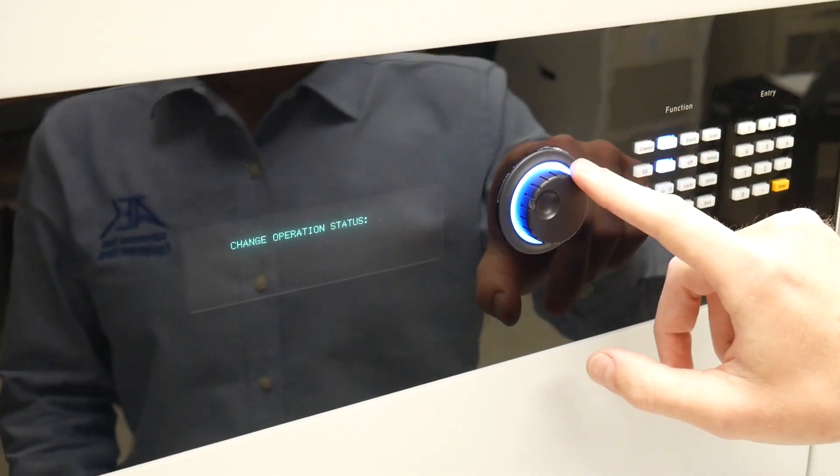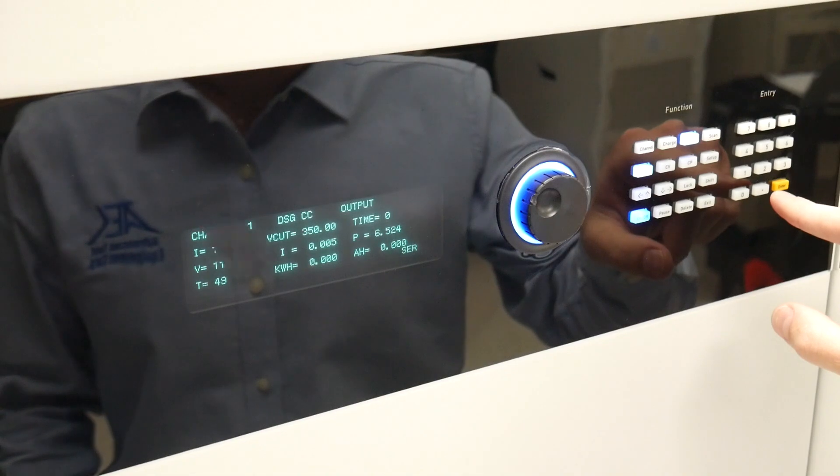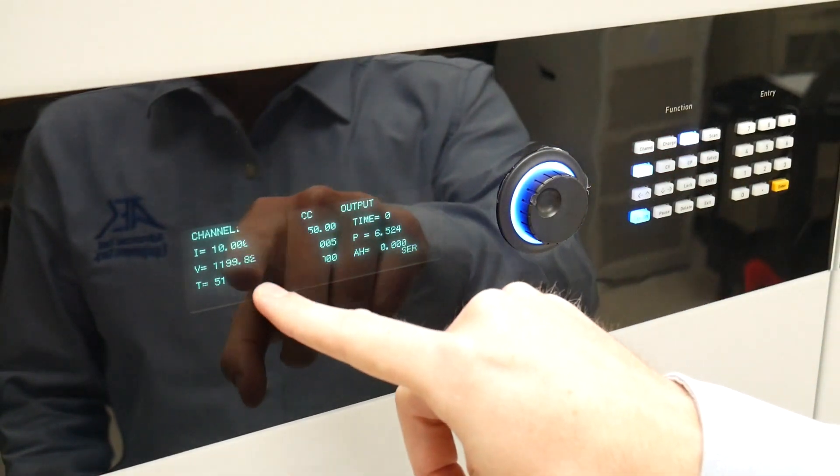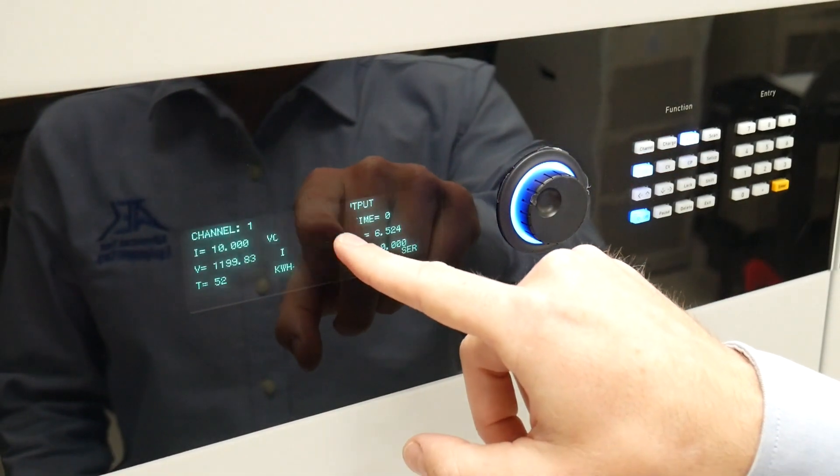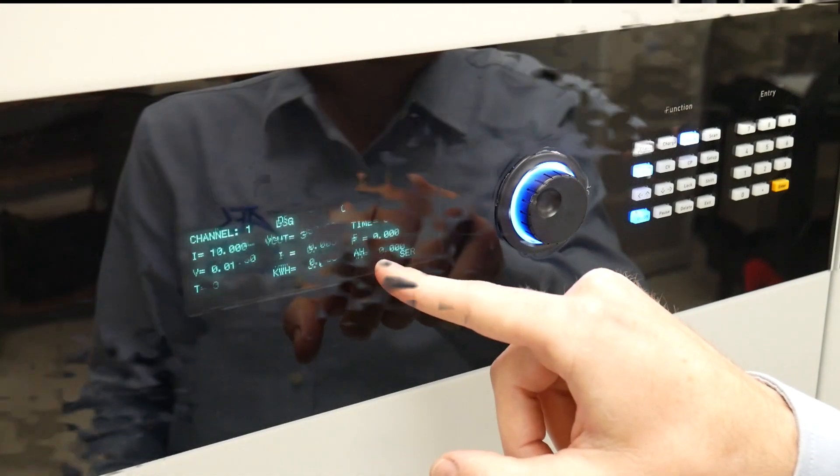Exit then turn the knob to yes then enter. Output is enabled with the on off switch again. With these settings we will discharge the battery at a consistent 10 amps until our battery voltage lowers from 1200 volts to 350 volts.